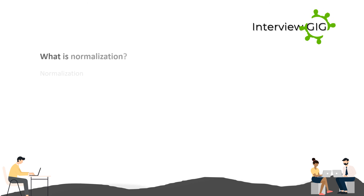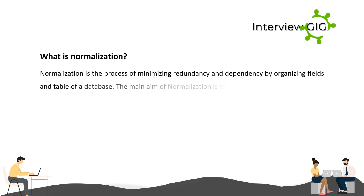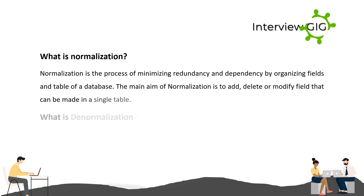What is normalization? Normalization is the process of minimizing redundancy and dependency by organizing fields and tables of a database. The main aim of normalization is to ensure that additions, deletions, or modifications of a field can be made in a single table.